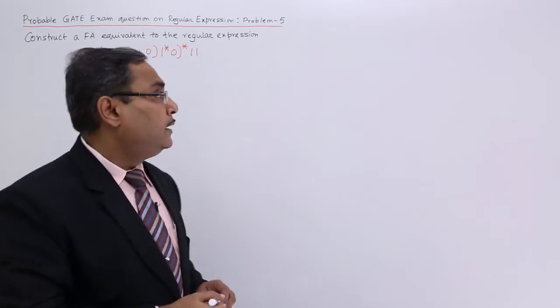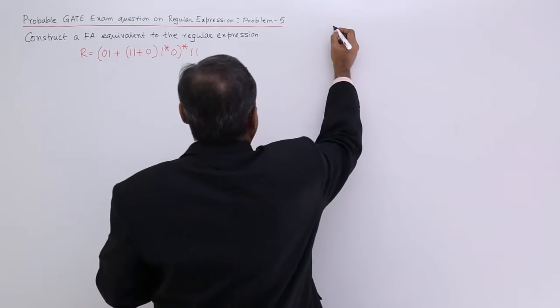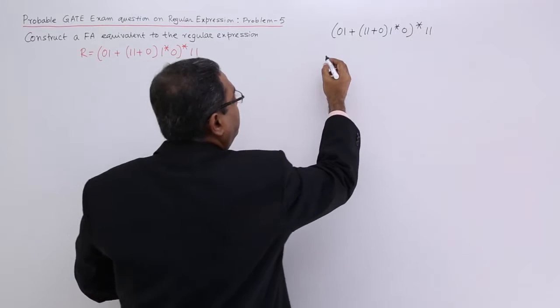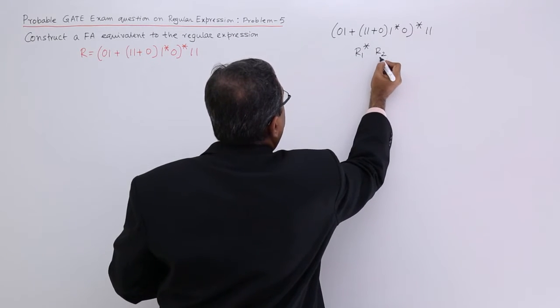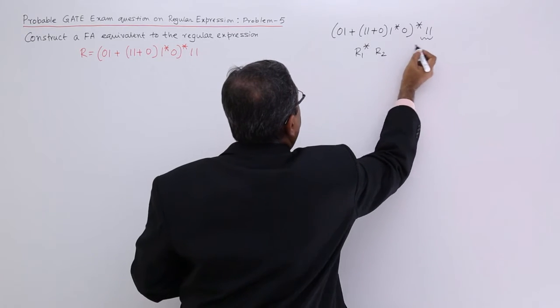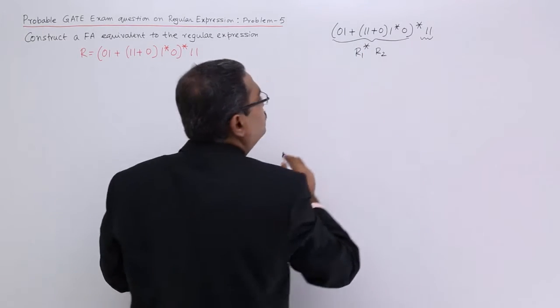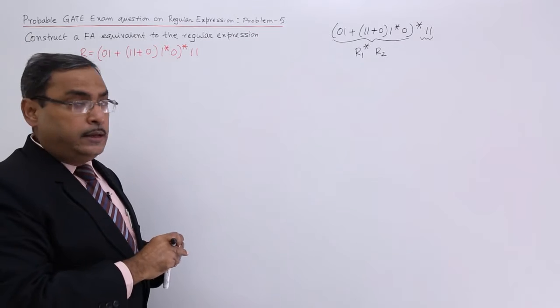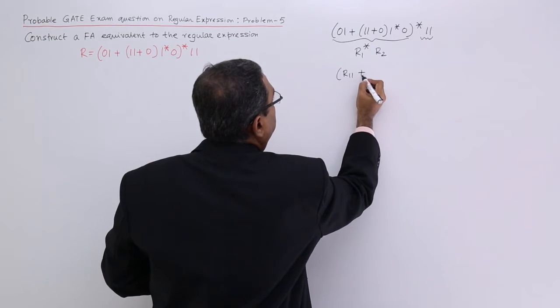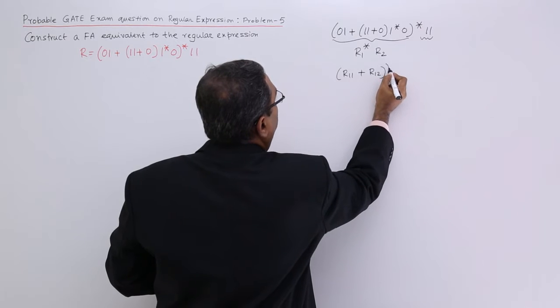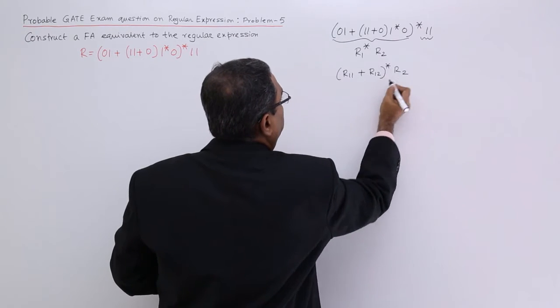Let me go for the solution. Here we are having, I can write this one as r1 star r2. Considering this one as r2 and this one as r1. This r1 star can be considered as r1 1 plus r1 2 whole star and that is my r2.